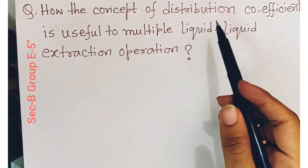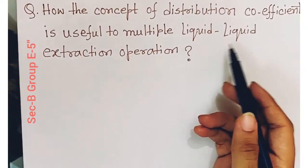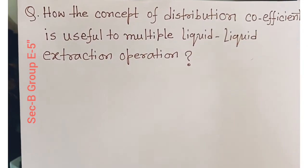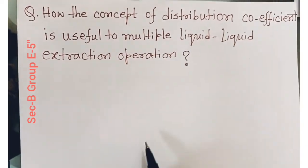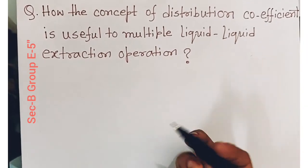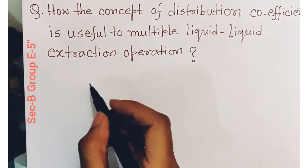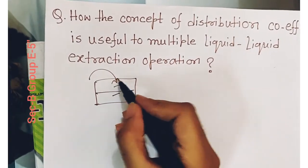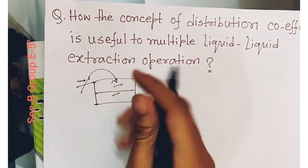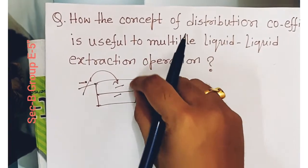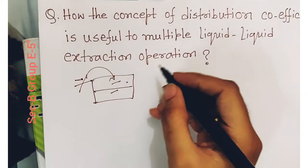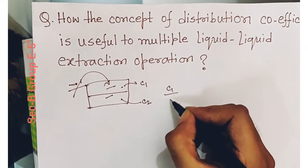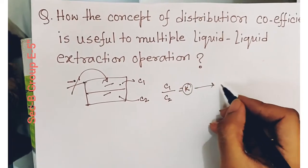Today we discuss how the concept of the distribution coefficient is useful in multiple liquid-liquid extraction operations. First, we need to know what the distribution coefficient is. If an excess amount of liquids or solids is added to a mixture of immiscible liquids, that solute must distribute itself in two phases in a definite concentration ratio. If in one solvent the concentration is C1 and in the other solvent the concentration is C2, then C1 to C2 is always constant — this is the distribution coefficient.